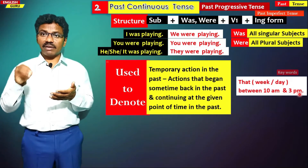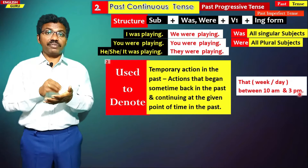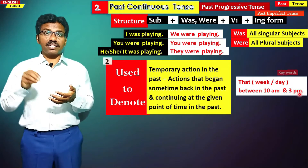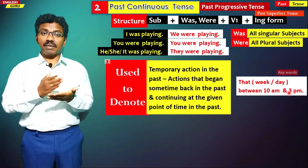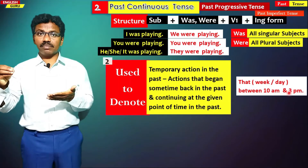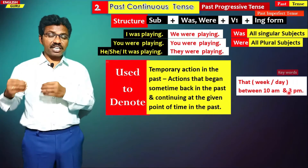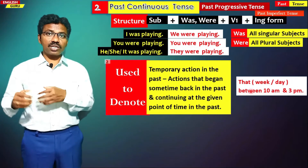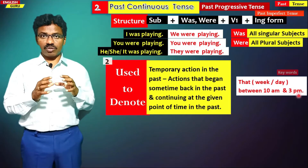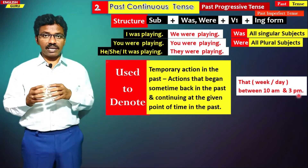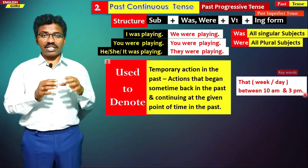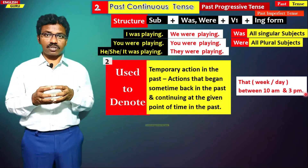There are certain keywords for this use: that week, that day, between 10 a.m. and 11 a.m., between 8 a.m. and 3 p.m. Such keywords are used in past continuous tense. Let us try to see them in examples.